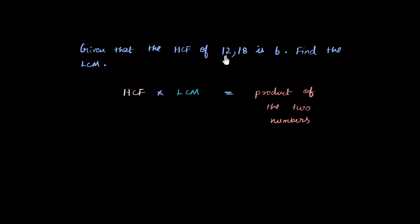You don't have to prime factorize all this now, because all you'll say is, oh, HCF is given to me. HCF is 6. That's given. That multiplied by LCM, which is what I need to find. LCM will be equal to the product of the two numbers. And the two numbers here are 12 and 18. So 12 times 18. And with this, I can find my LCM.